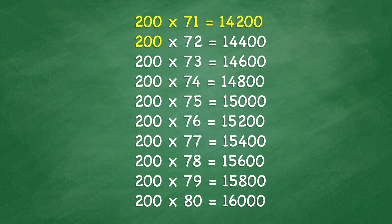200 times 74 equals 14,800. 200 times 75 equals 15,000. 200 times 76 equals 15,200. 200 times 77 equals 15,400. 200 times 78 equals 15,600. 200 times 79 equals 15,800.